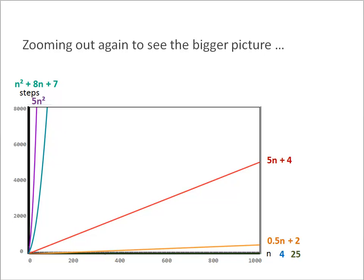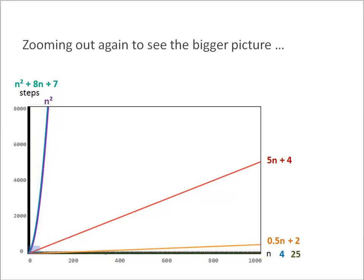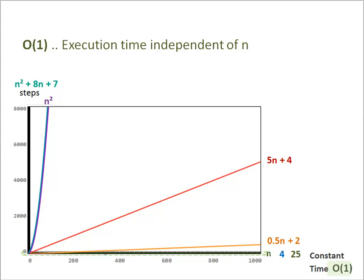Now I switch back to the original graph of N squared and we're going to group those graphs into three categories. Those that require constant time, they're right here at the very bottom, and here we speak of big O of 1.